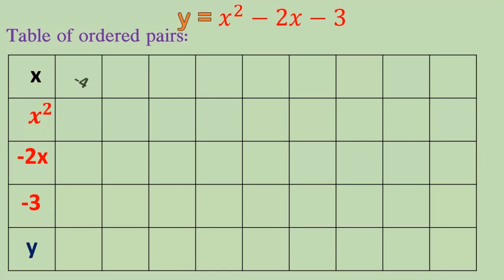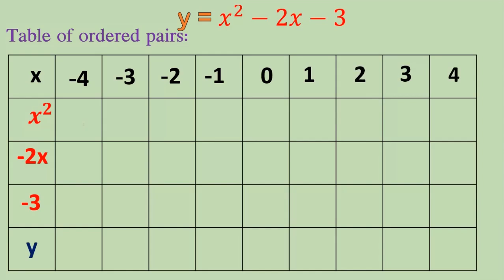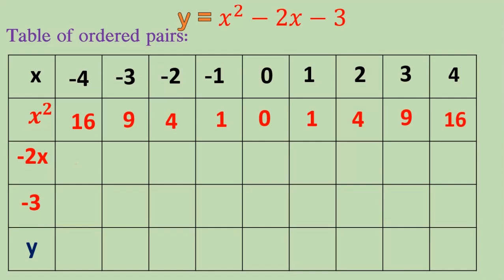For x values, we have to take minus 4, minus 3, minus 2 to 4. For the x squared row: minus 4 times minus 4 equals plus 16, minus 3 times minus 3 equals plus 9, minus 2 squared equals 4, then 1, 0, 1, 4, 9, 16.